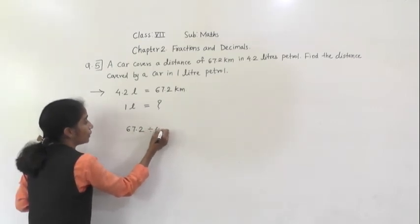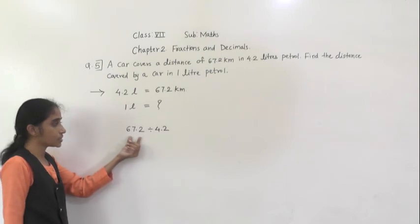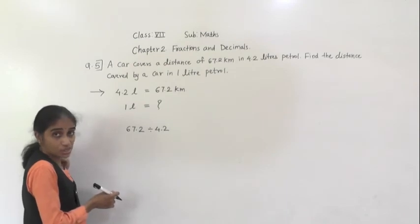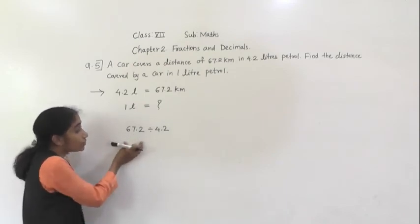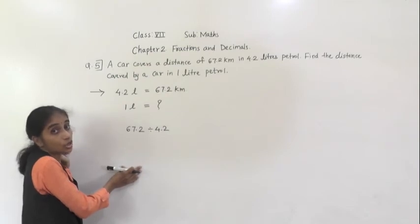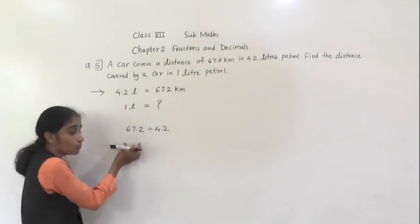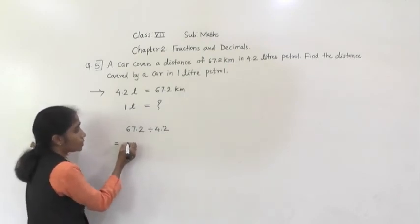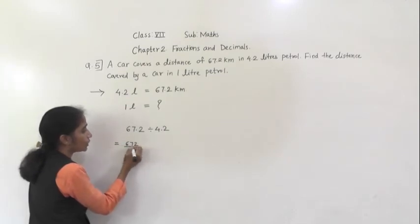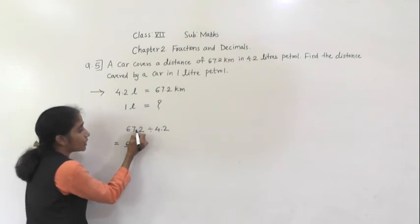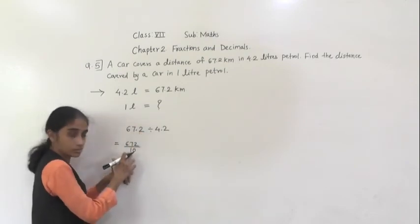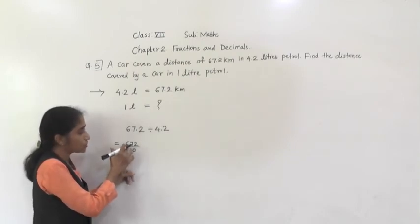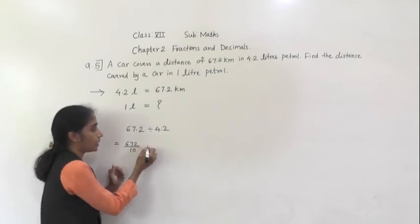For 67.2, we have to divide by 4.2. Now, decimals division — whenever we do division of decimal numbers, we convert them to fractions. So 67.2 becomes 672 upon 10 — why upon 10? After decimal point here 1 digit, so after 1 we give 1 zero. So 672 upon 10. Divided by sign as it is. Write decimal number in fraction. Now 4.2 becomes 42 upon 10 — after decimal point 1 digit, so 42 upon 10.